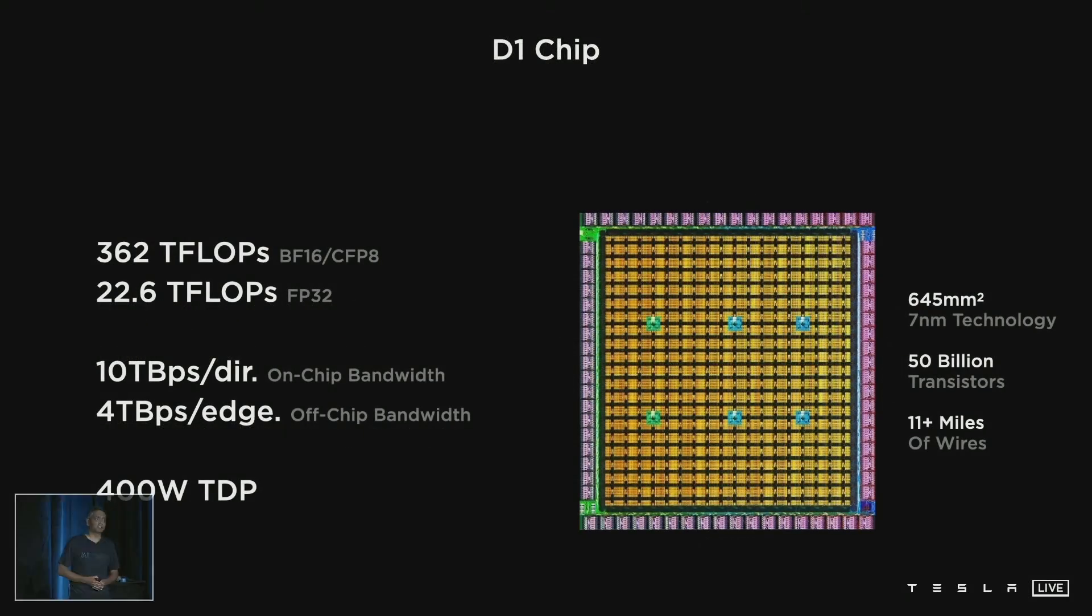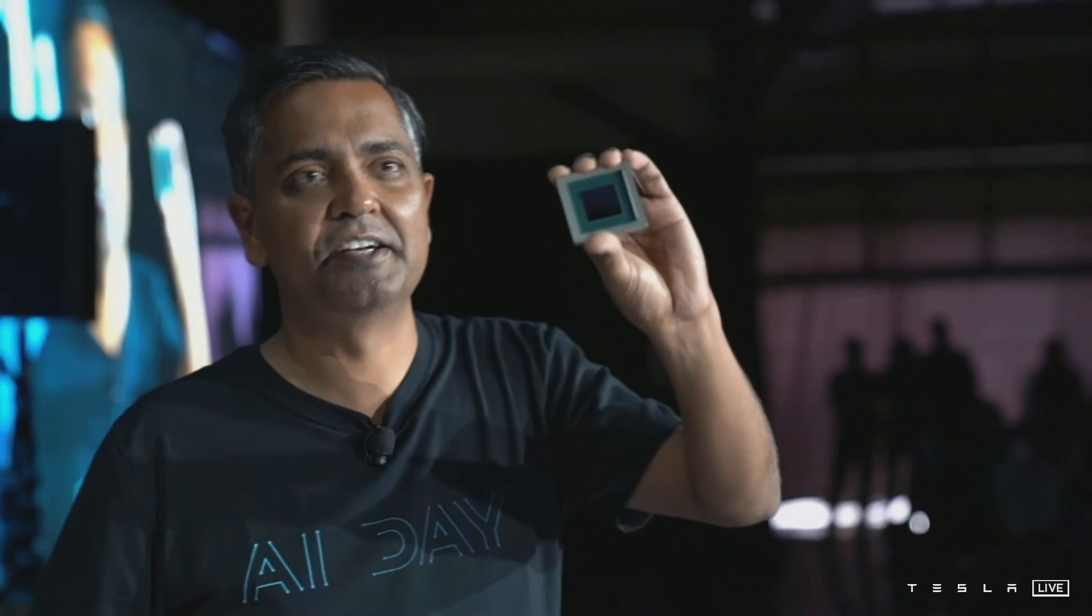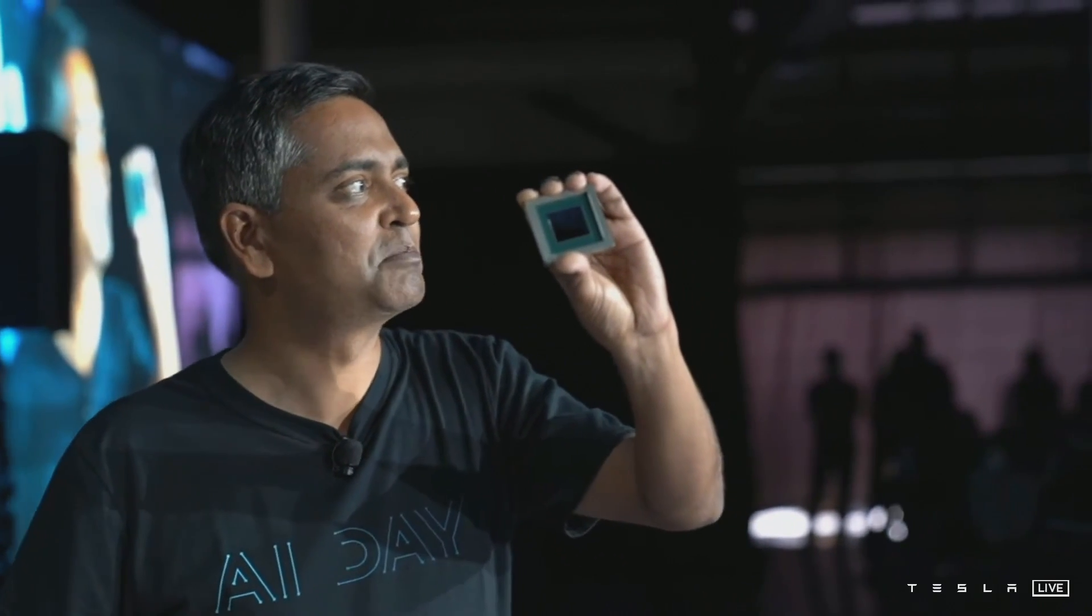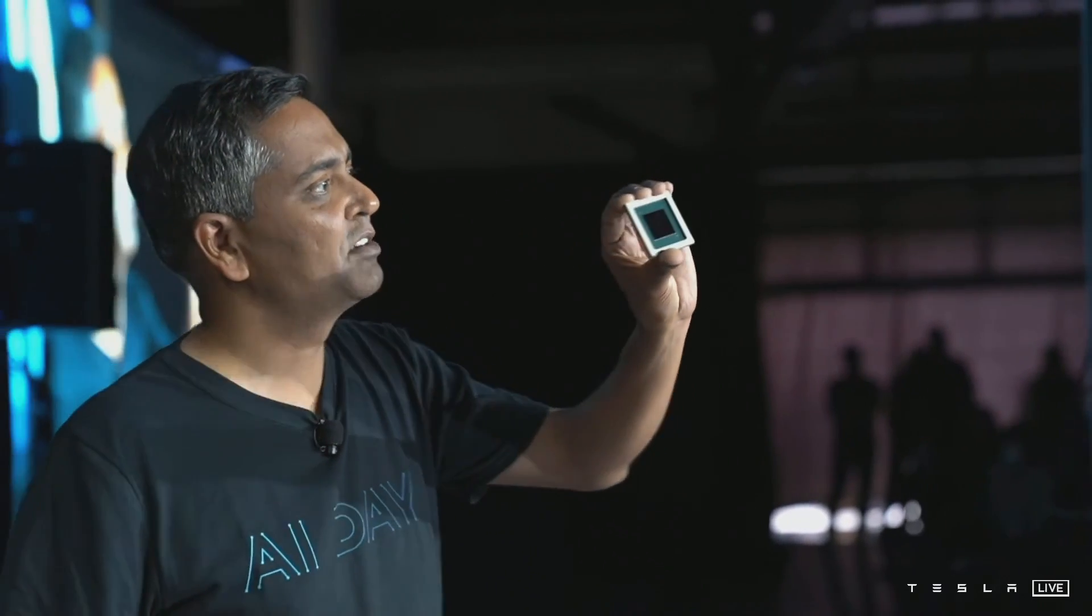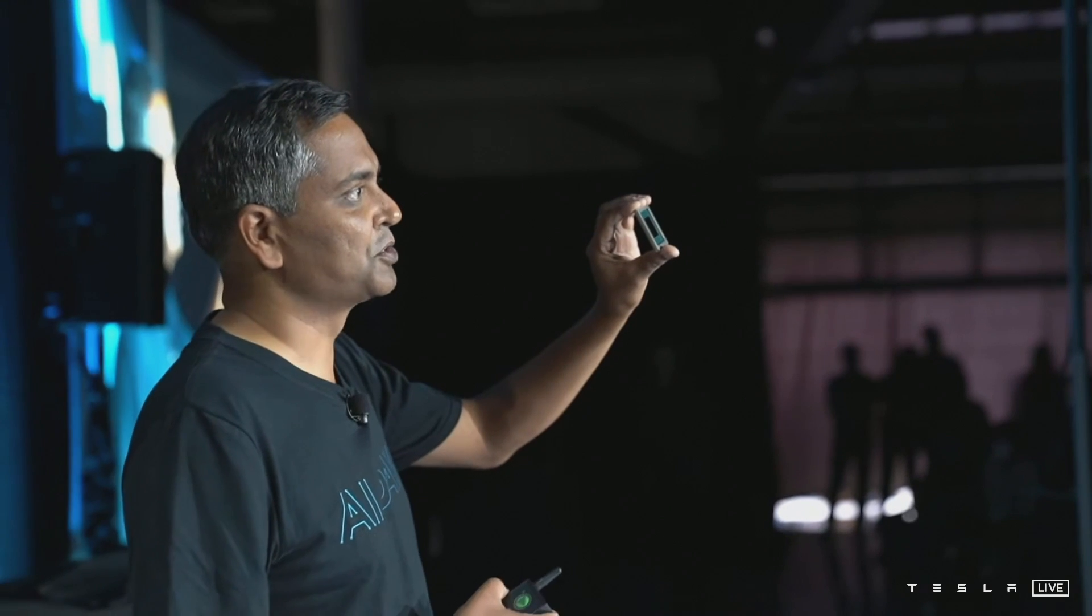If we put all of it together, we get training optimized chip, our D1 chip. This was entirely designed by Tesla team internally, all the way from the architecture to GDS out and package.